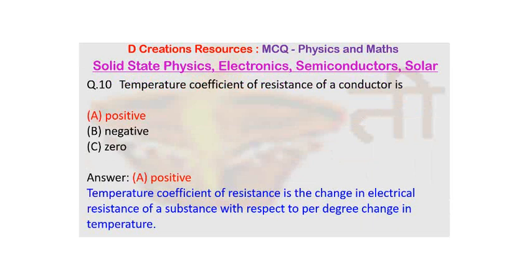It is basically the change in electrical resistance of a substance with respect to per degree change in temperature. So, if you are heating a substance or even if you are cooling it, one needs to see what change is happening in the resistance and that gives you the temperature coefficient of resistance.